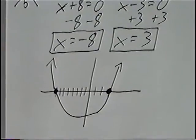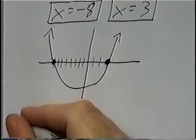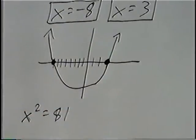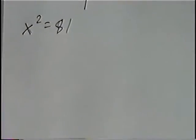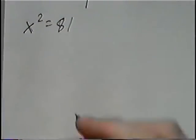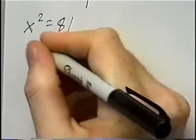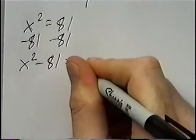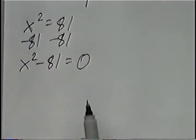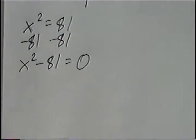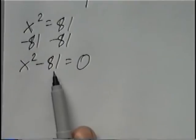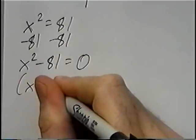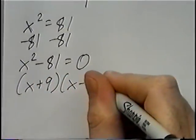For the second and last question, the equation is x squared equals 81. We'll first set the equation equal to 0 by subtracting 81 on both sides, giving x squared minus 81 equals 0. Since 81 is a perfect square, we can take the square root of 81, which is 9, and the factors would be (x plus 9) times (x minus 9).